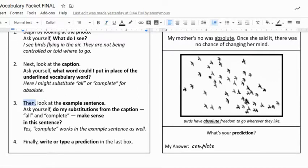Number three, then I look at the example sentence below the picture. Ask yourself, do my substitutions from the caption, 'all' and 'complete,' make sense in this sentence? We're back here now. 'Birds have absolute freedom to go wherever they like.' So that was the example sentence here. If you choose 'all' or 'complete' for this one, I think that would work really well. So I said yes, complete works in example sentence as well.